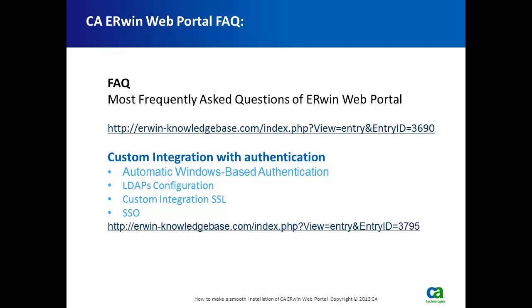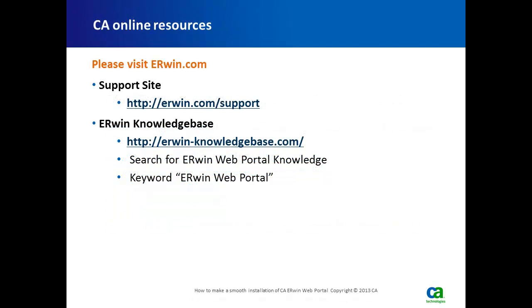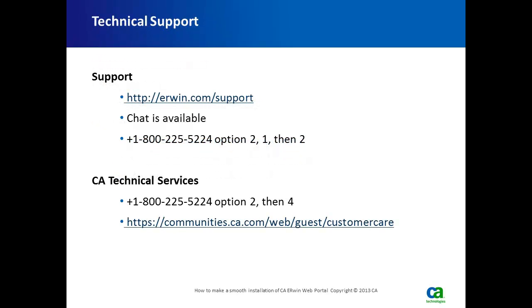CAA online resources are available at http://erwin.com/support and the CAA Erwin Knowledge Base. You can reach CA Erwin Technical Support at http://erwin.com/support, via chat, or by calling 1-800-225-5224.